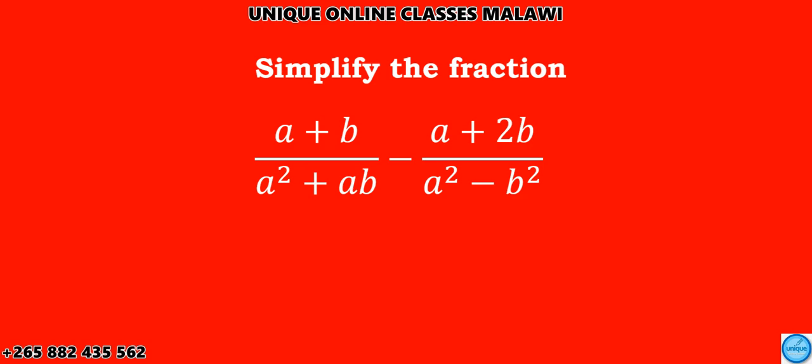Let's see the solution of this one. It was to simplify the fraction a plus b divided by a squared plus ab, minus a plus 2b divided by a squared minus b squared. So let's have the solution here.